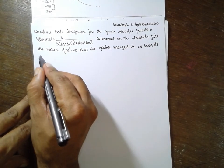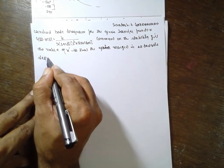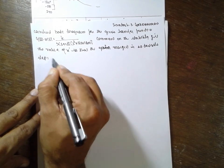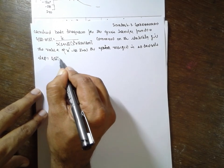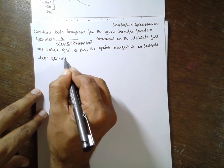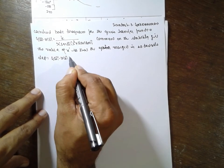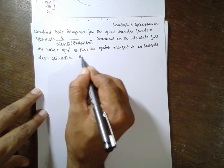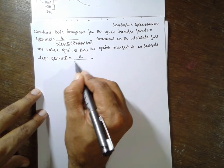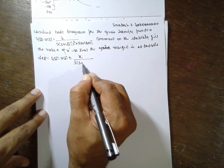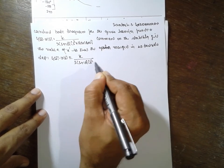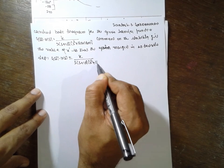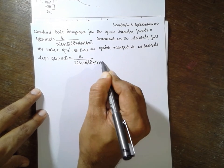Question type 1, Step 1. G(S) is equal to K(S). H(S) is equal to K divided by S(S + 10)(S² + 16S + 1600).